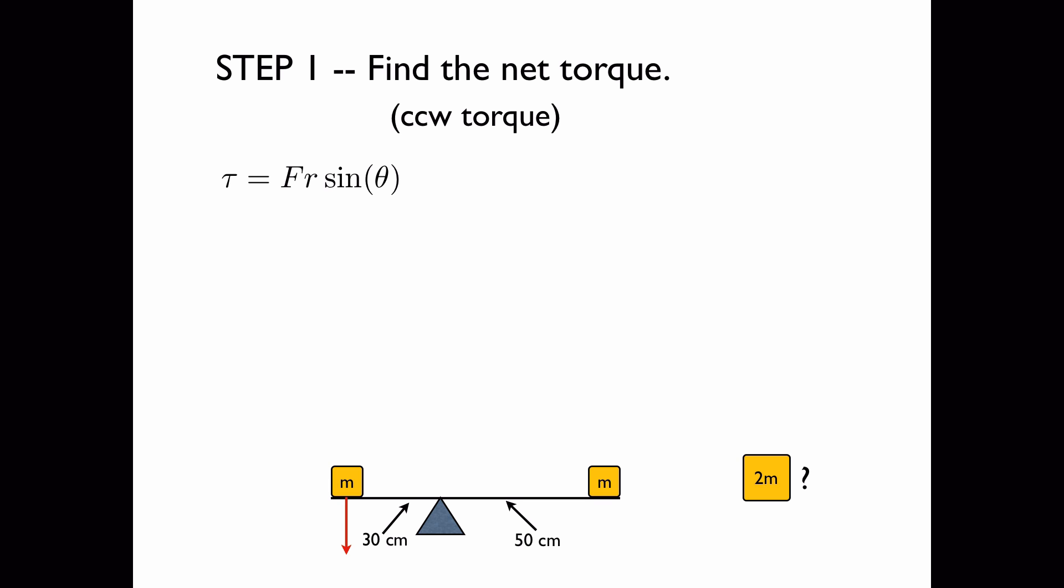So we have the equation for torque. In this case sin theta is equal to 1 because the red arrow is perpendicular to the lever arm. And so theta is 90 degrees and sin theta is 1. However, the torque is not zero because we have the force which is mg and the radius which is 30 cm or 0.3.